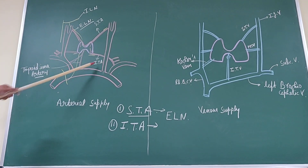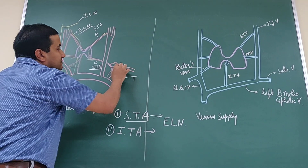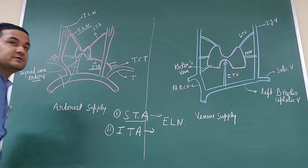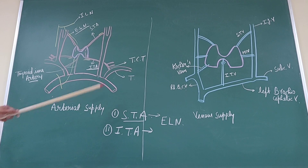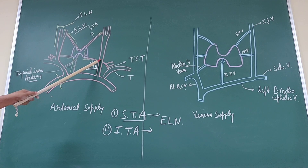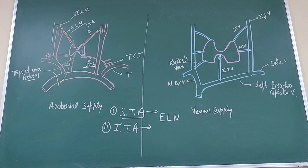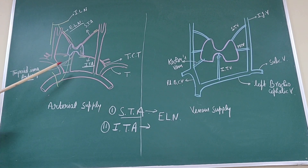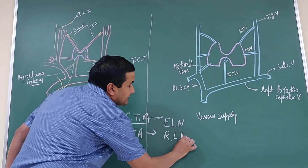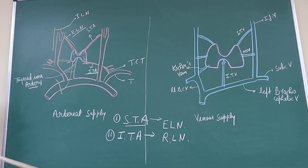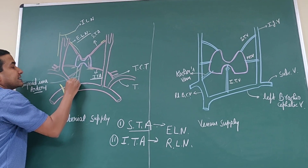The inferior thyroid artery is a branch of the thyrocervical trunk. This inferior thyroid artery hooks, curves, and runs towards the base of the thyroid gland. It is closely related to the recurrent laryngeal nerve, which arises from the vagus nerve and hooks around to become the recurrent laryngeal nerve.